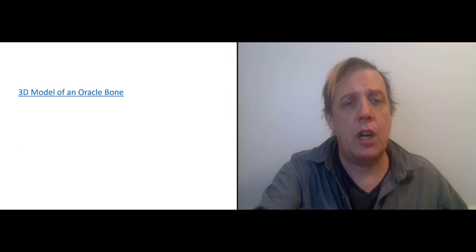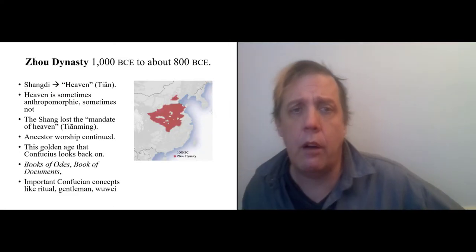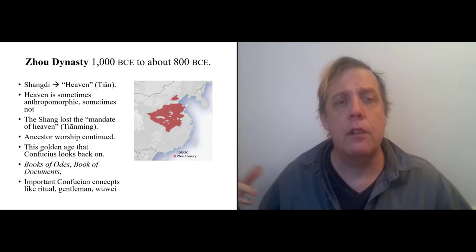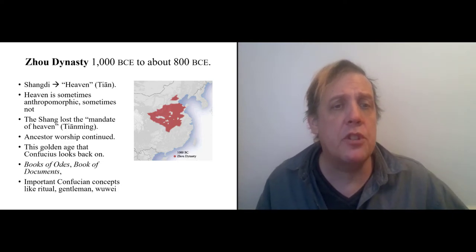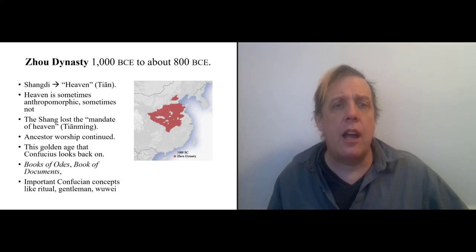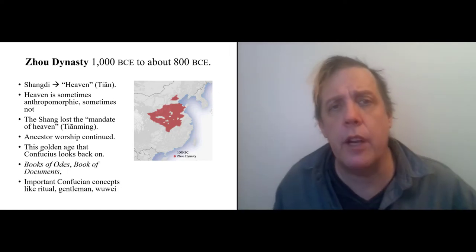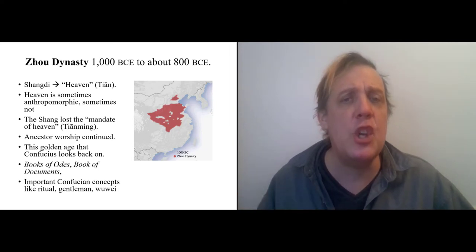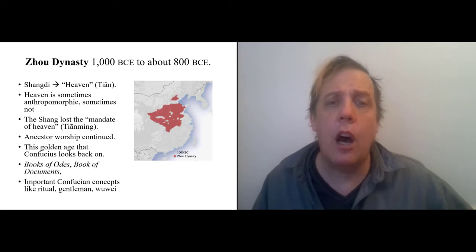So the earliest Chinese writing is firmly tied to the religious practices and divination, the idea that you could try and predict the future. So the Shang dynasty fell and the idea of the religion transformed. Shangdi, the god on high, became heaven, Tian. So Tian is the supreme religious object.